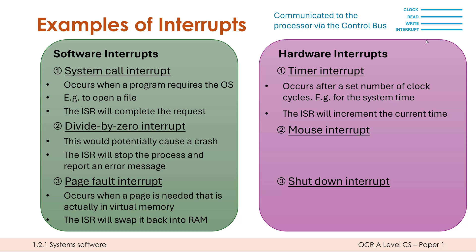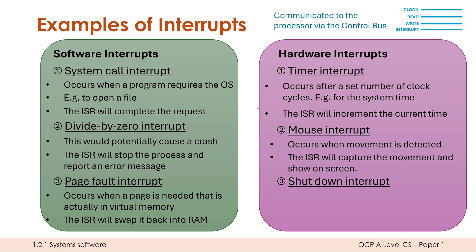Mouse interrupts occur whenever you move your mouse. We use interrupts here because the alternative would be constantly monitoring the movement of the mouse — but if the mouse hasn't moved in a few minutes, there's no point constantly checking. It's far better that as soon as you move the mouse, a signal is sent along the control bus telling the CPU the mouse has moved, and the CPU then follows the movement and shows the cursor moving on screen. So when the mouse is just sitting there, the CPU does something else. The second you move it, an interrupt is triggered, the CPU stops what it's doing, and listens for whatever is being sent down the buses representing the mouse movement.